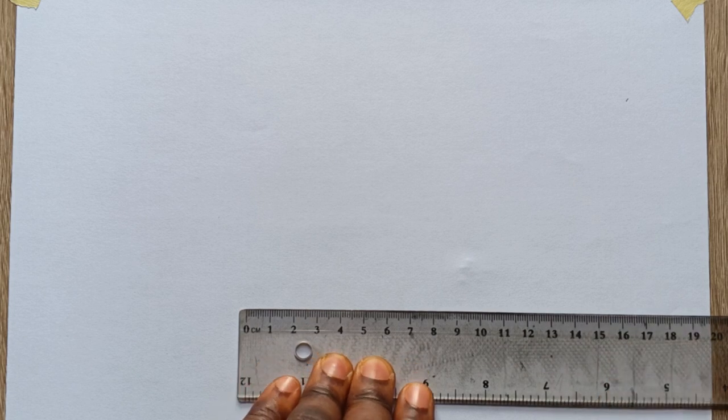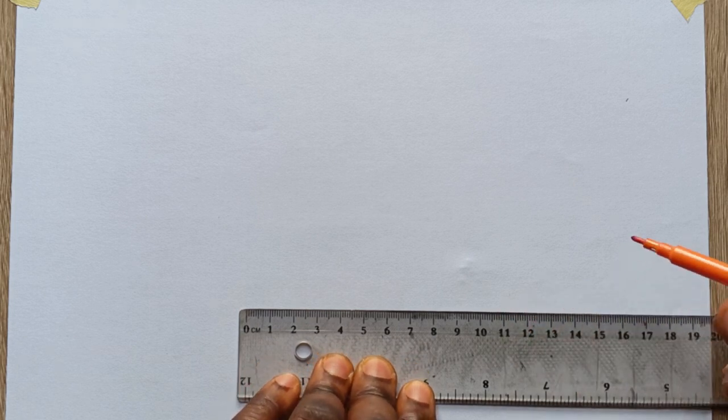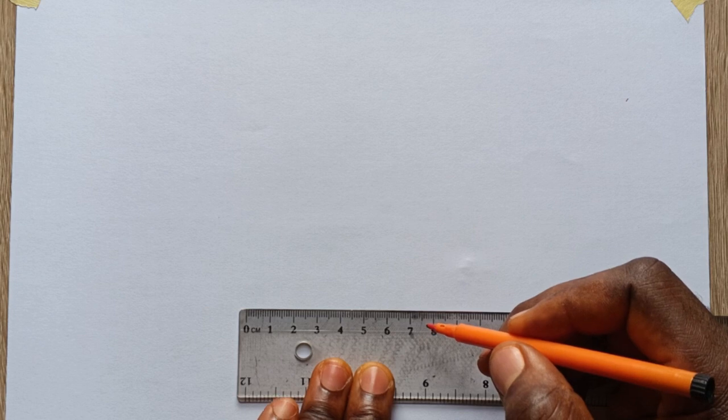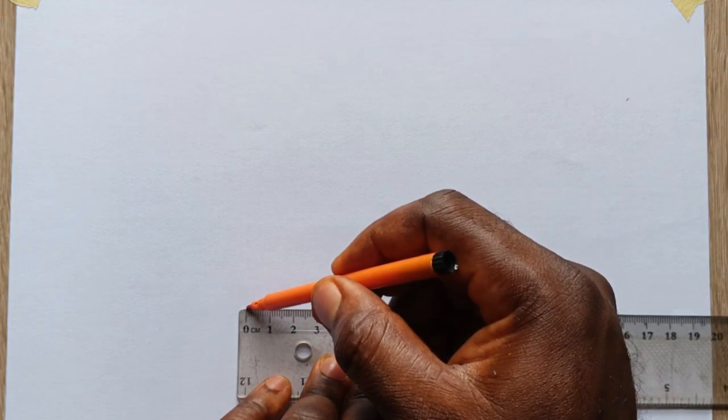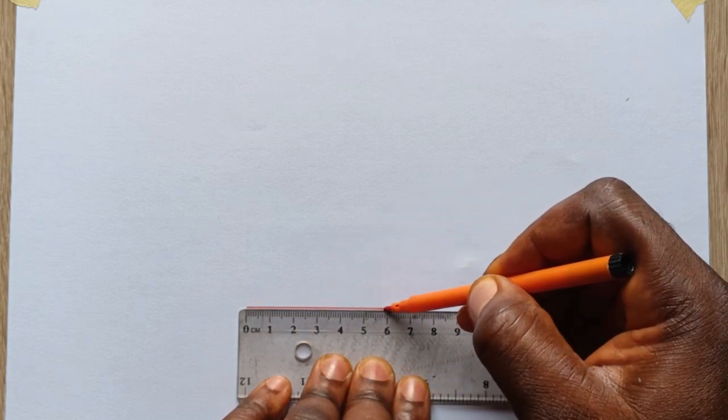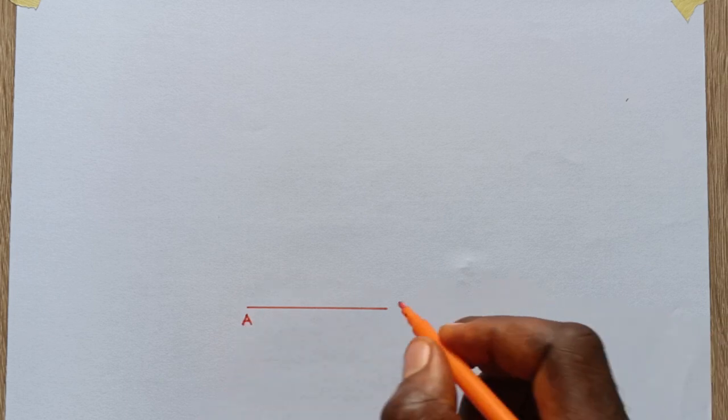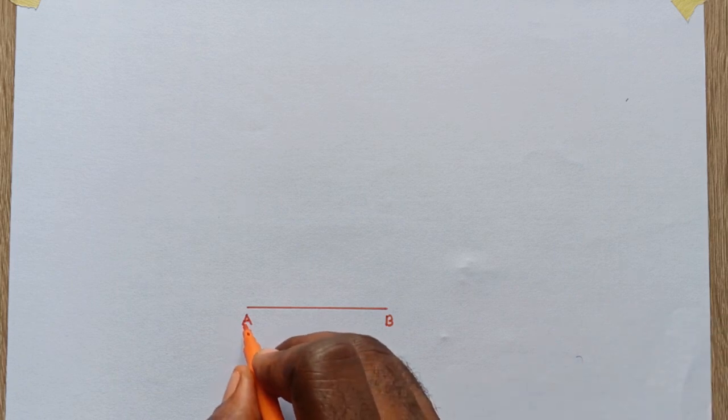The first thing you need to do is draw a straight line of a given dimension. For the sake of this tutorial, I'll be using 6 cm. Once you draw a straight line of 6 cm, label this point as your point A and then this is your B. In some cases, if you want to go with figures, you can equally number these as number one and two.